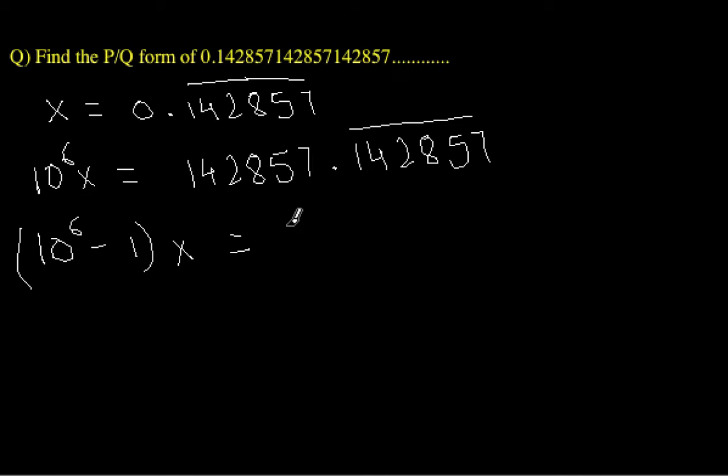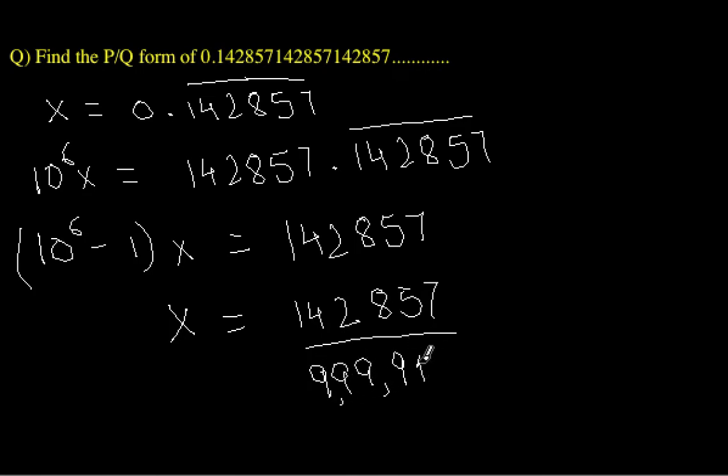We will get 142857, because 142857 minus 0 is 142857, and this decimal part cancels out with this decimal part. So we are left with only this.